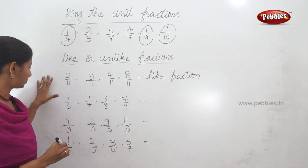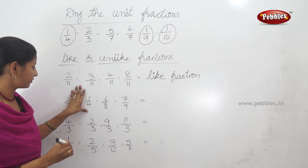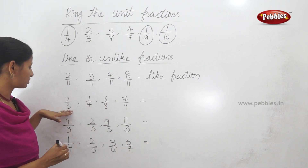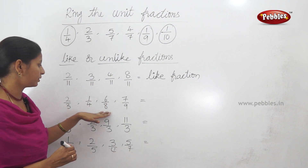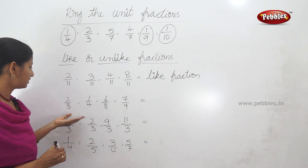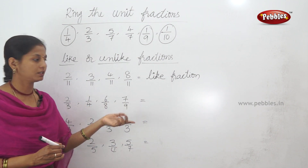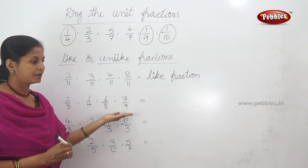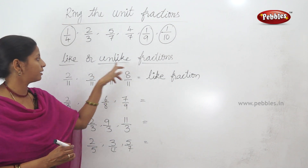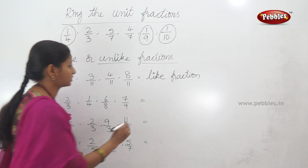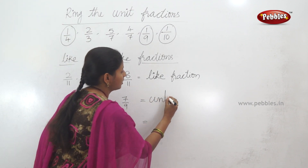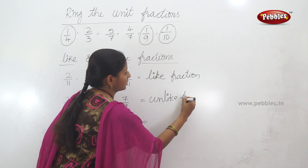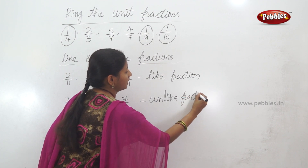Next example: 2 by 3, 1 by 4, 6 by 8, 7 by 9. The denominators are different numbers — 3, 4, 8, 9. These are unlike fractions because the denominators are different.